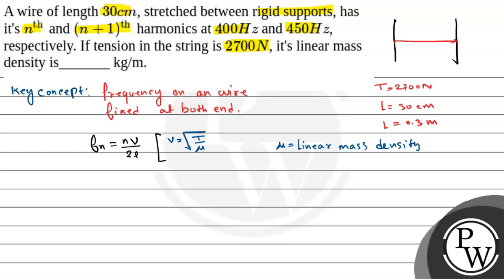We have to find that. Now, according to the question, nth frequency that is nv by 2L is 400 Hz. And n plus 1th, that is n plus 1 times v by 2L is the frequency that is 450 Hz.